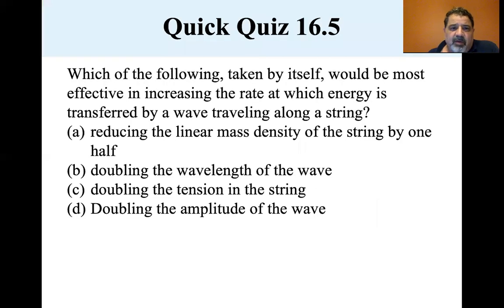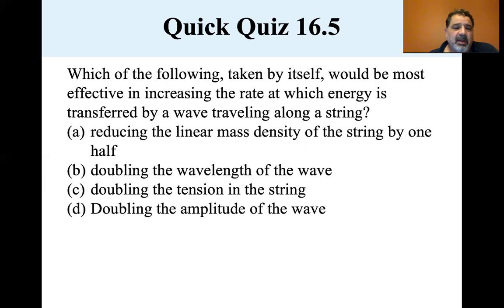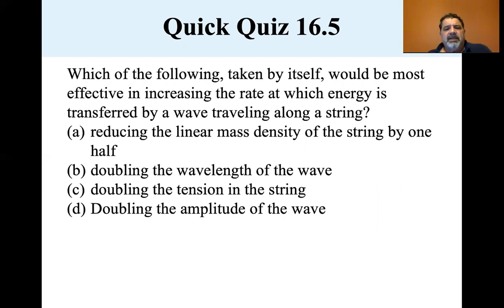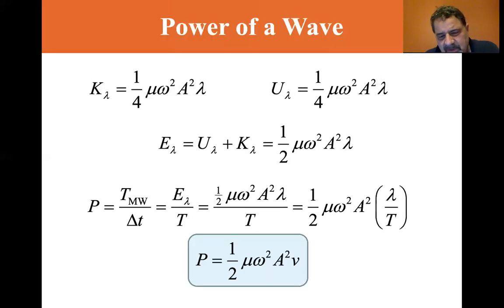Let's do a quick quiz. Which of the following taken by itself would be most effective in increasing the rate at which energy is transferred by a wave traveling along a string? The choices are: (A) reducing the linear mass density by one half, (B) doubling the wavelength of the wave, (C) doubling the tension in the string, (D) doubling the amplitude of the wave. Let's look at the equation.